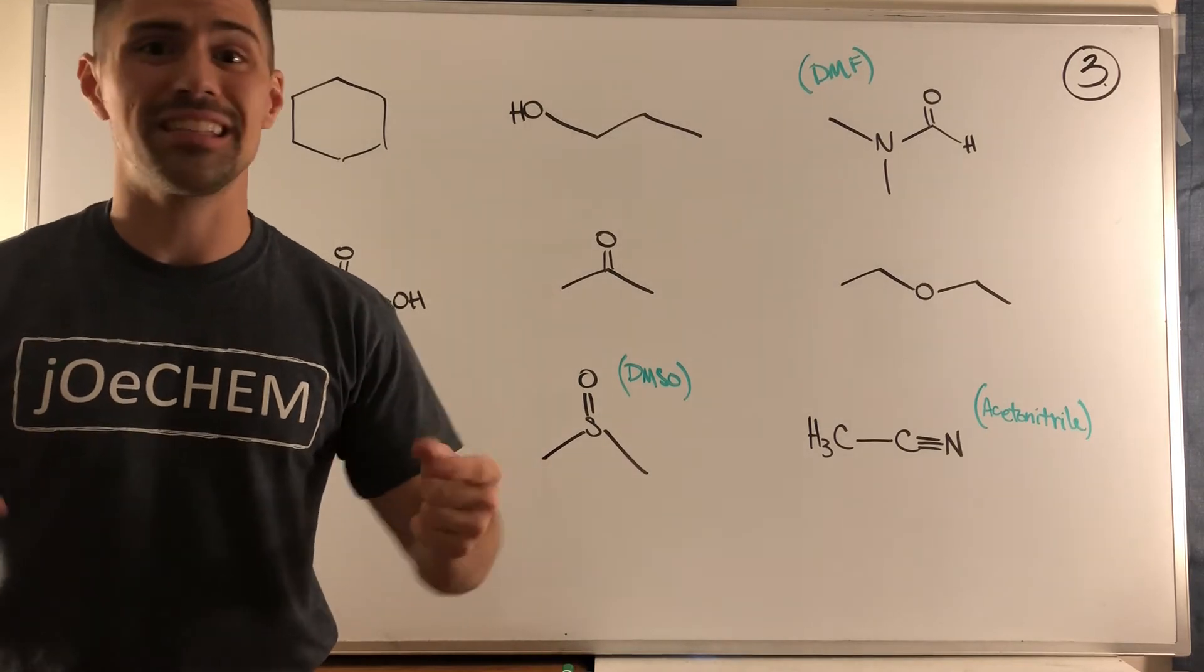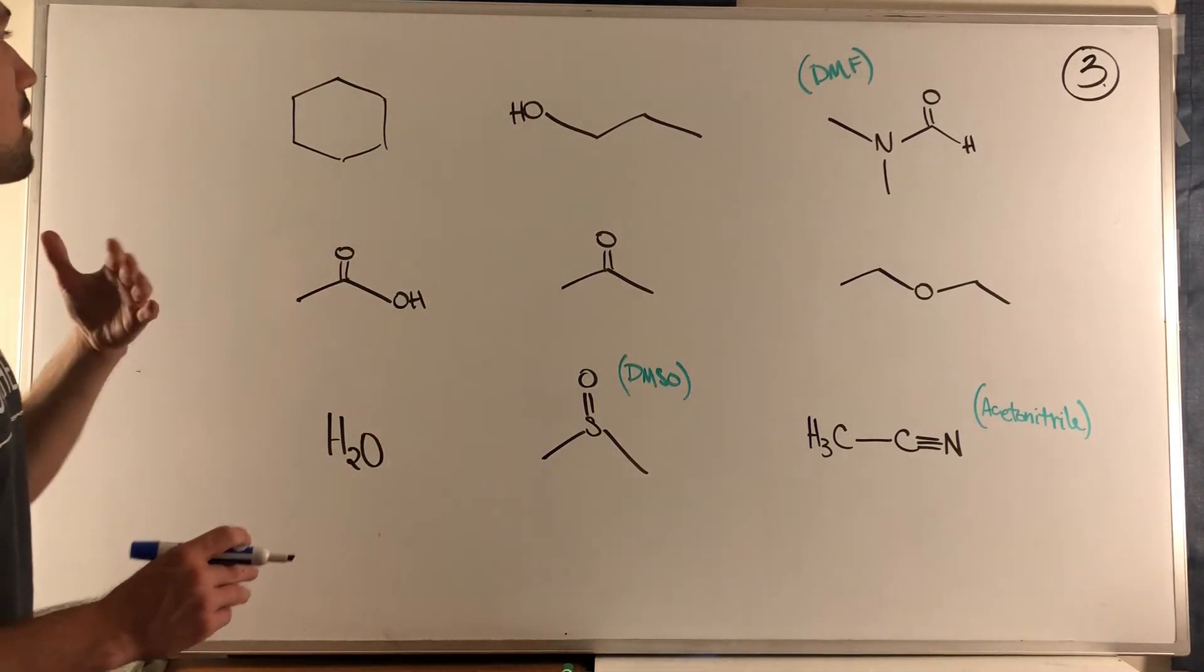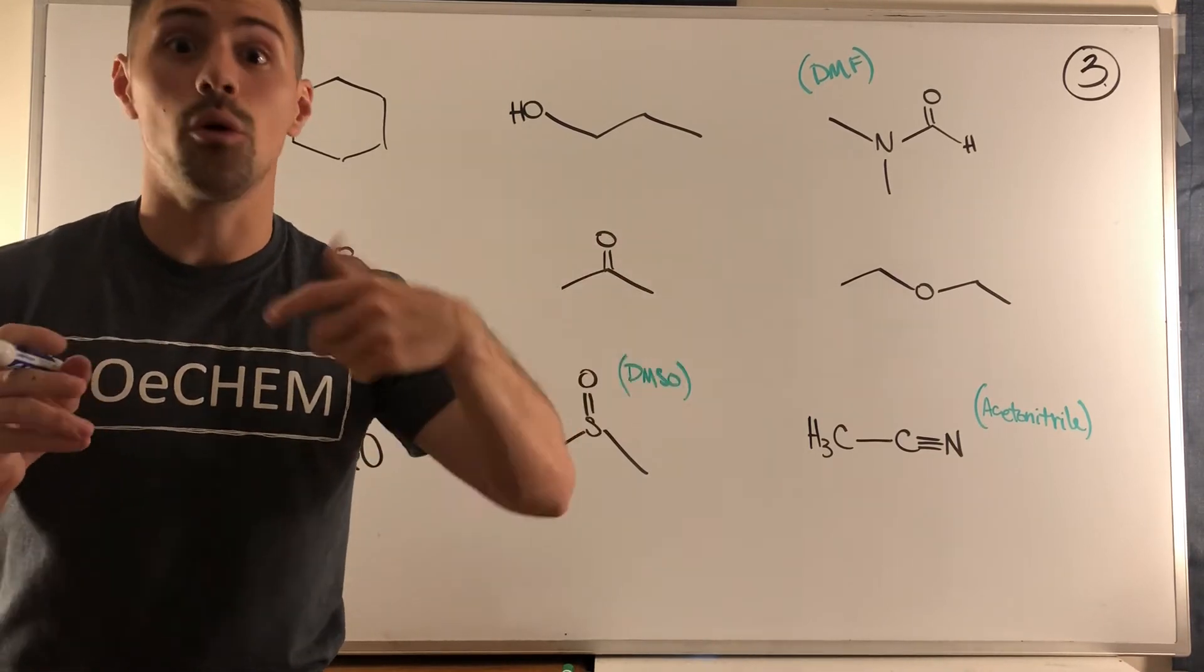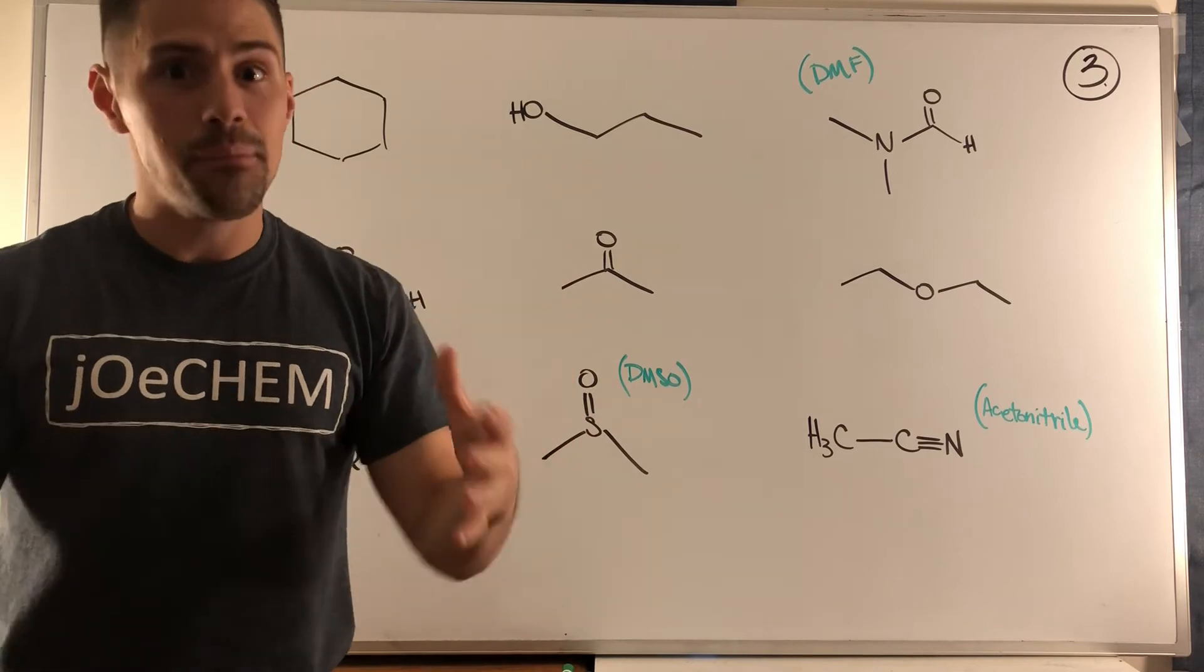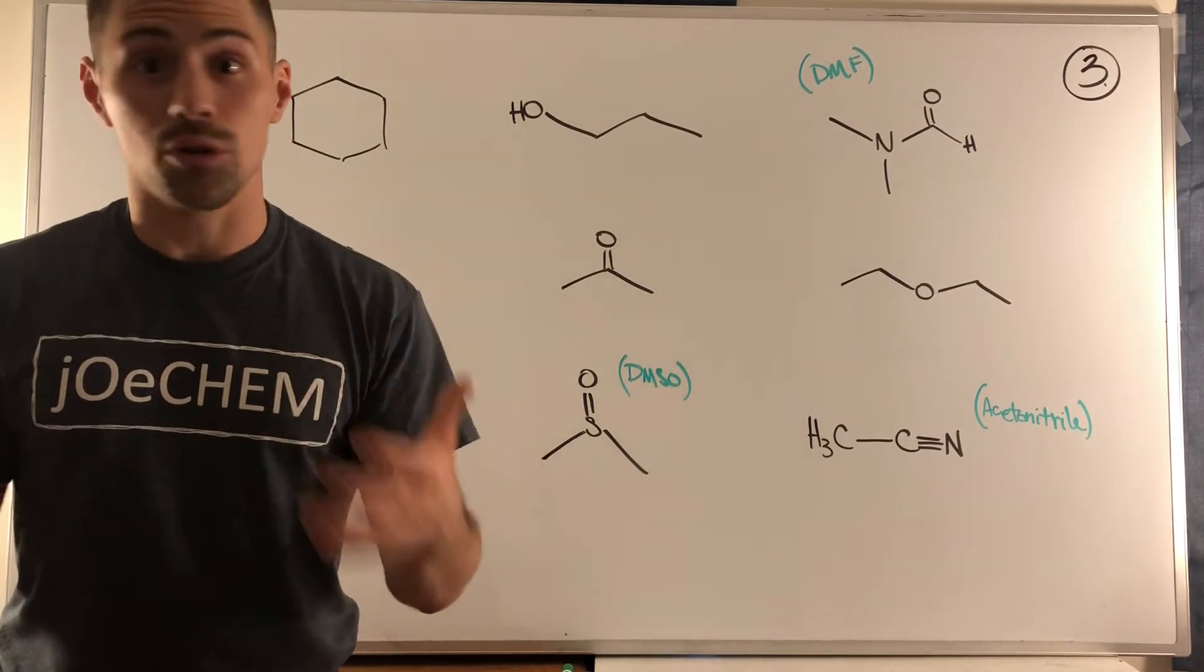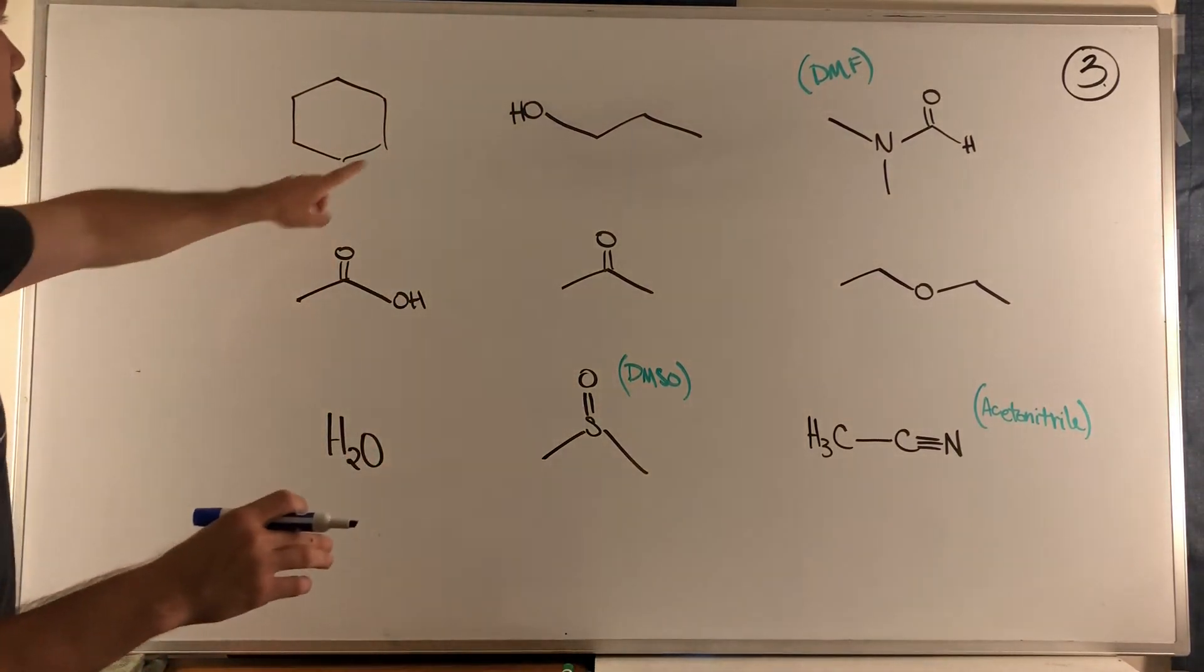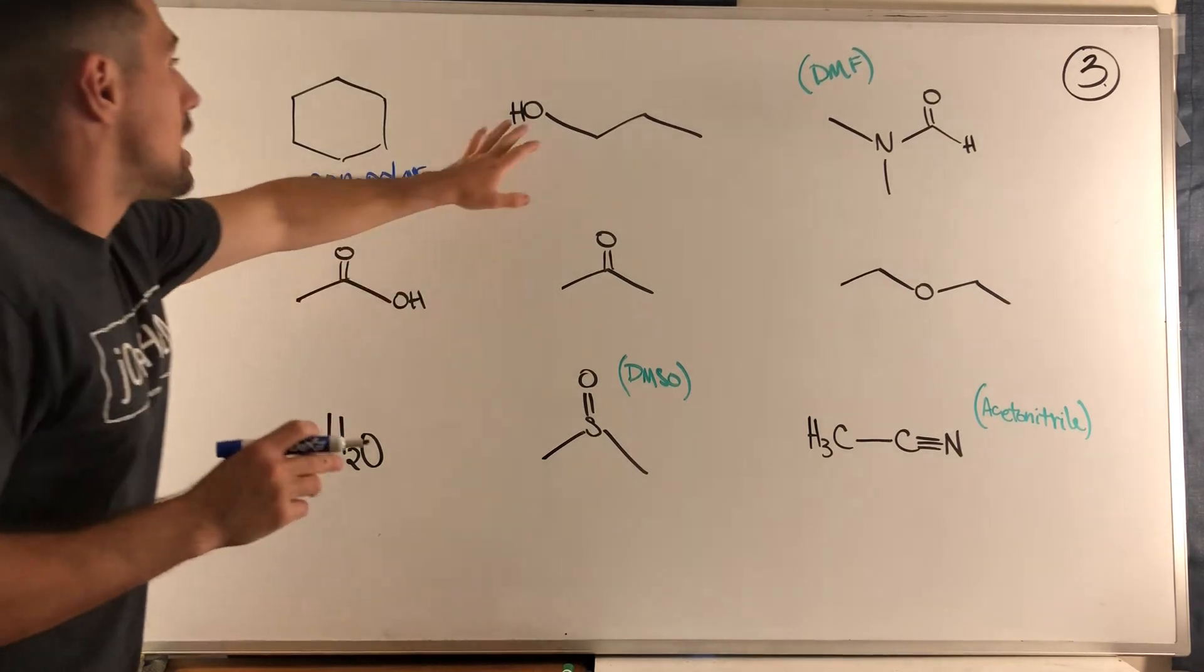Okay gang, so for problem three, again super easy. Nine molecules, we just have to label them all. So we have nine solvents here and our choices here is that we just need to identify them as nonpolar, polar protic, or polar aprotic. So remember, nonpolar means you have no electronegative molecules causing a dipole moment, or you have symmetry - symmetry matters. For polar protic, you're gonna have some type of electronegative atom causing a dipole moment, as well as you're going to have a strong electronegative atom bonded directly to hydrogen - that makes it protic.